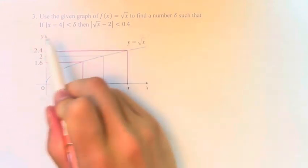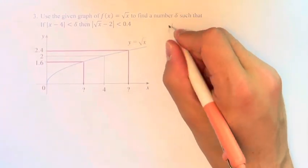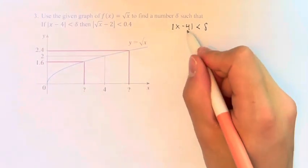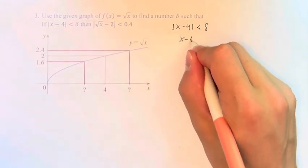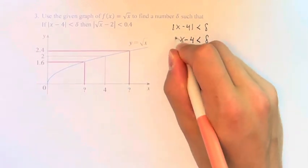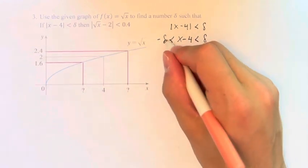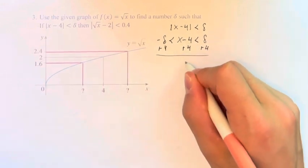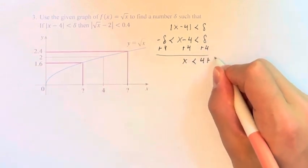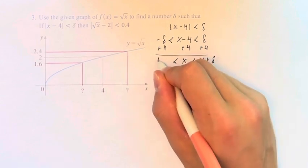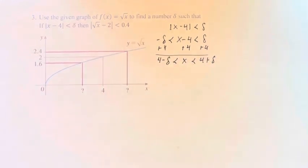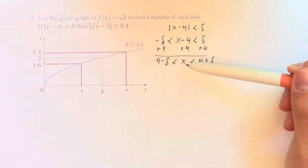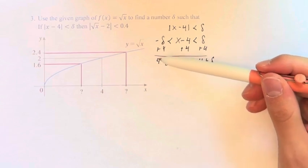So what we have to do is interpret these inequalities. If we have the absolute value of x minus 4 is less than delta, that means the magnitude of this is less than delta. That means that x minus 4 is less than delta and greater than negative delta. So this is basically saying we have a range of values of x that are no more than delta away from 4.